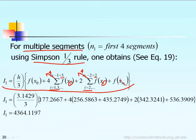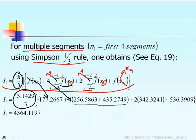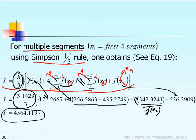x at n1 means x4, because n1 equals 4. Now we are ready to substitute the numerical values. h over 3 is equal to 3.14 divided by 3. The factor level 4 is applied, and this summation will have f(x1) and f(x3). Then two times f(x2) is included here.